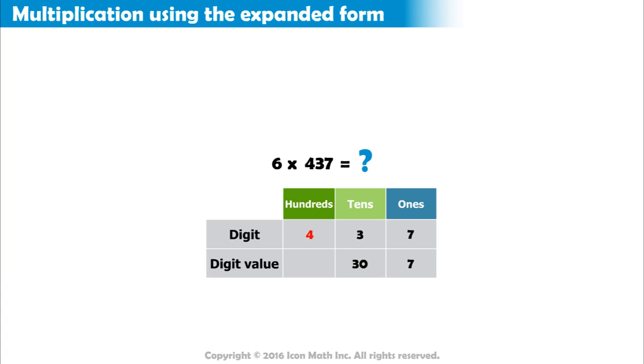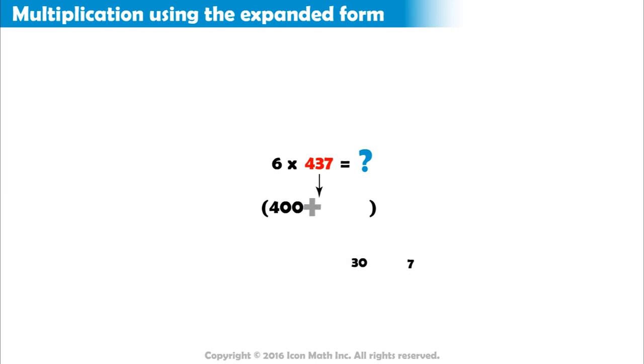And 4 is in the hundreds place. So, its value is 400. The number 437 in expanded form is 400 plus 30 plus 7.